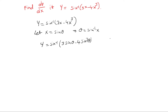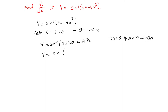Now, 3 sin theta minus 4 sin cube theta matches the formula for sin 3 theta. Sin 3 theta is equal to 3 sin theta minus 4 sin cube theta. So y is equal to sin inverse of sin 3 theta, and sin inverse and sin cancel, giving y equal to 3 theta.